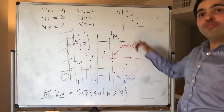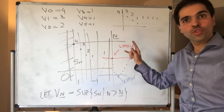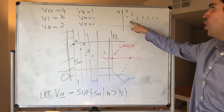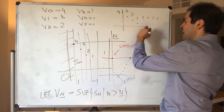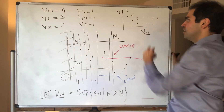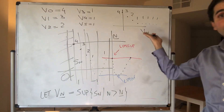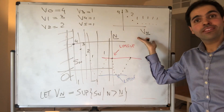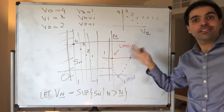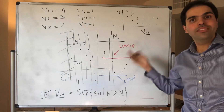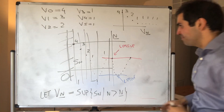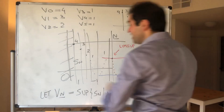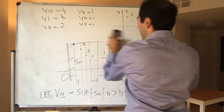It is not always true that the sequence stabilizes — that's just this particular example. However, what is true is that the sequence Vn is non-increasing, and this is always true.